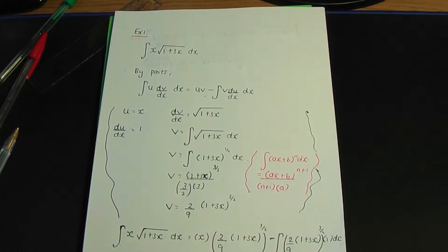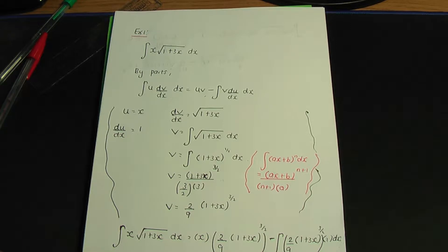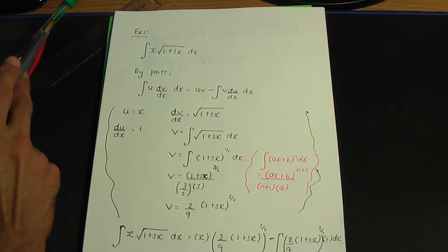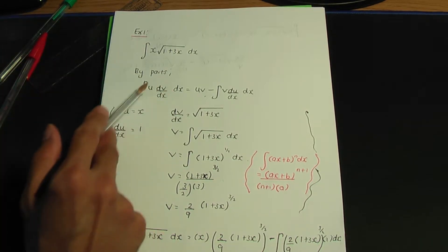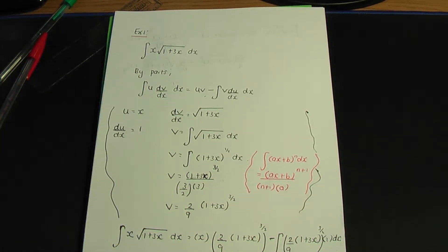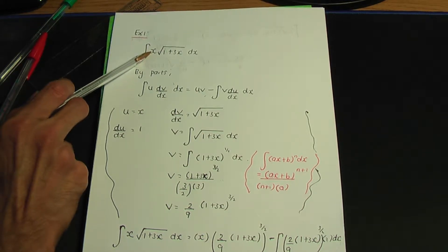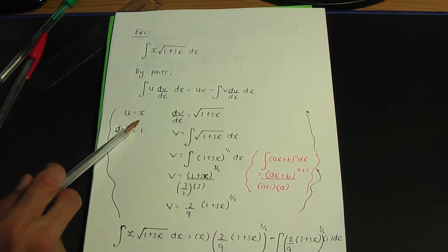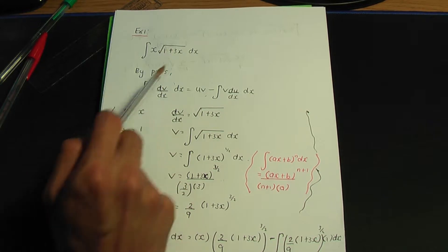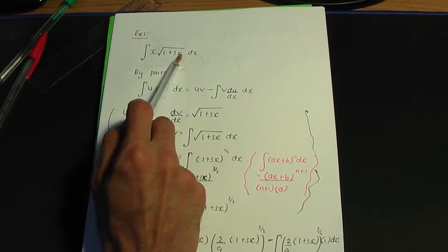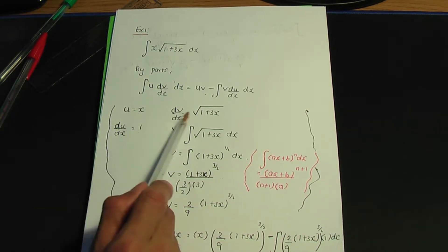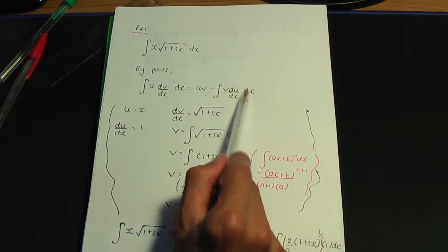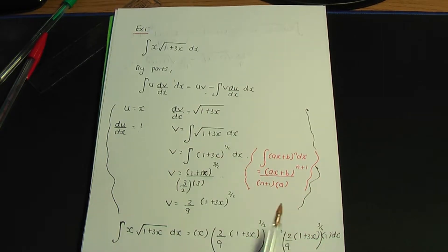Here's the tip when using integration by parts: generally, unless you have a special case, take u to be the x term and dv/dx to be the remaining term. In this case, I took u to be x and dv/dx to be the root of 1 plus 3x, and by doing that, v du/dx becomes easy to integrate.